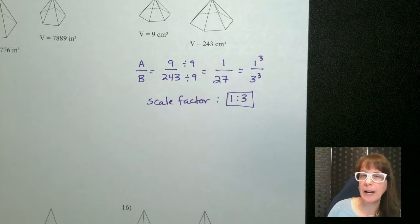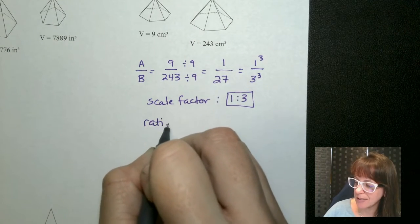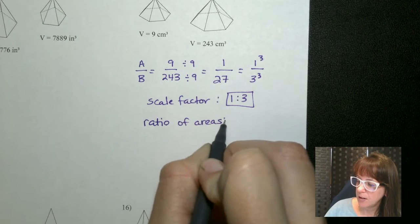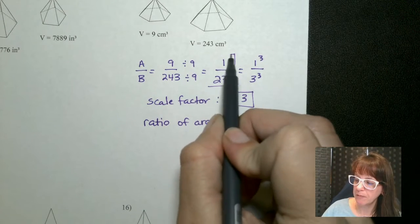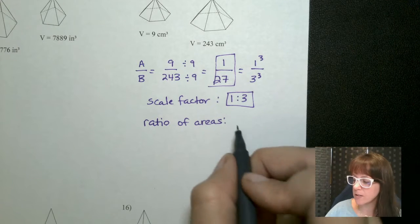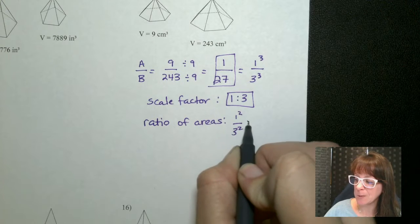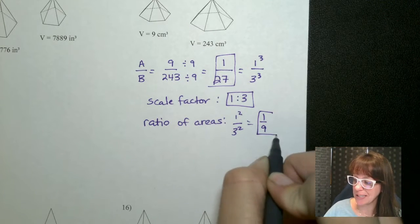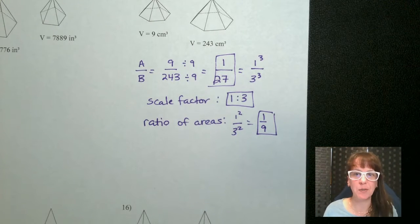So what would that be for areas? The ratio of my volumes is 1 to 27, but the ratio of my areas would be 1 squared over 3 squared. So we're gonna get 1 to 9 just like that.